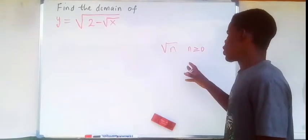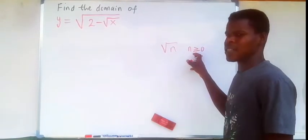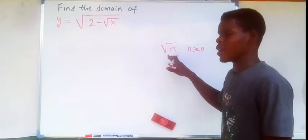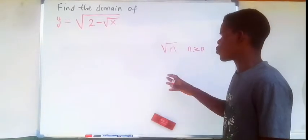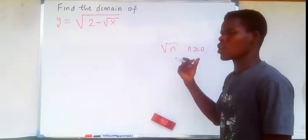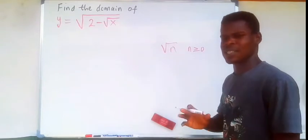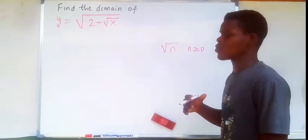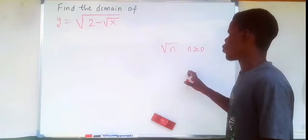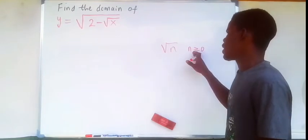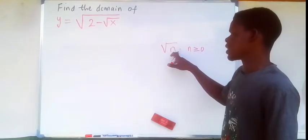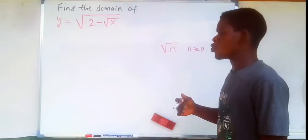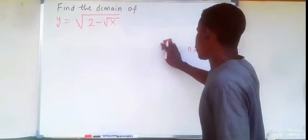The reason is that if n is less than 0, we get the square root of a negative number. The square root of a negative number does not exist on the set of real numbers — it may exist on the set of complex numbers, but we don't want the radicand to be less than 0.